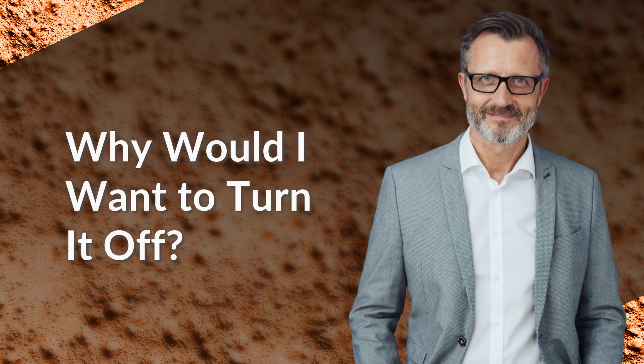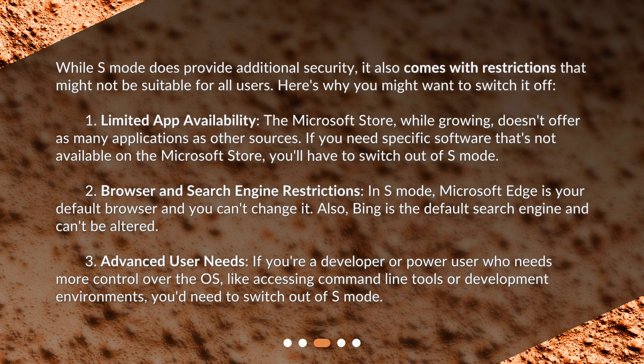Why would I want to turn it off? While S-Mode does provide additional security, it also comes with restrictions that might not be suitable for all users. Here's why you might want to switch it off. First, limited app availability. The Microsoft Store, while growing, doesn't offer as many applications as other sources. If you need specific software that's not available on the Microsoft Store, you'll have to switch out of S-Mode.